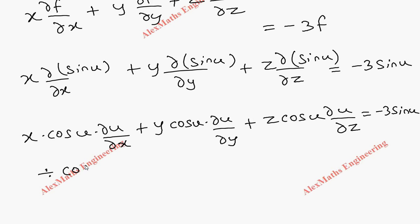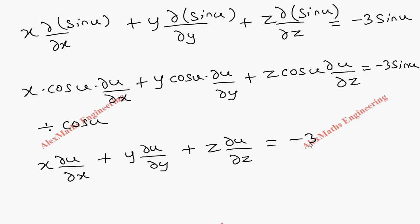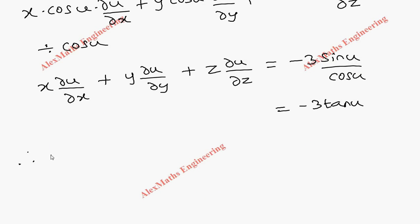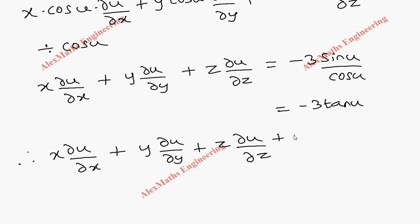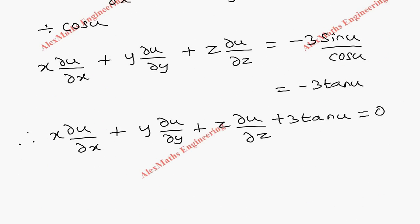Now dividing every term by cos u, the first term becomes x times ∂u/∂x, the second term is y times ∂u/∂y, and the third term is z times ∂u/∂z, equal to minus 3 sin u divided by cos u, which equals minus 3 tan u. Bringing 3 tan u to the left side, we get x ∂u/∂x plus y ∂u/∂y plus z ∂u/∂z plus 3 tan u equals 0. Hence proved.